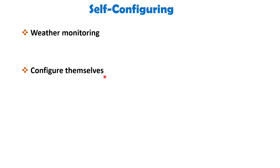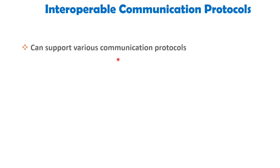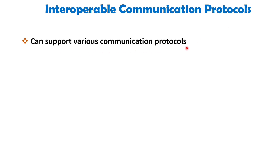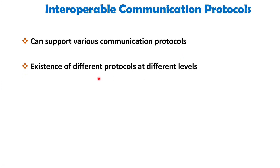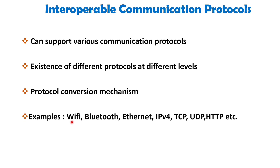The next characteristic is interoperable communication protocols. IoT devices may support a number of interoperable communication protocols and can communicate with other devices and with the infrastructure. All these devices are connected and sharing data with one another using different protocols at different levels, so the IoT infrastructure must be enabled with a protocol conversion mechanism. Examples of IoT protocols include Wi-Fi, Bluetooth, Ethernet, IPv4, TCP, UDP, HTTP, etc., which will be discussed in future videos.